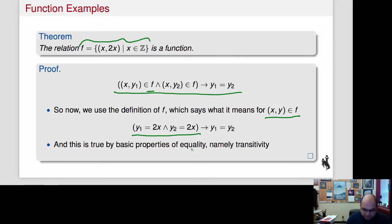Now, why is this true? This whole statement actually ends up being just true because of properties of equality. y1 = 2x, y2 = 2x, so y1 and y2 are both equal to the same thing. That means that they're equal to each other. And so that's done.